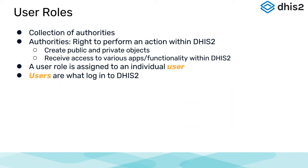What do we mean by user role? Previously we talked about authorities in DHIS2 — these are individual permissions. A user role is a collection of such authorities. For example, if we group together the five different authorities mentioned in the previous slide, we can make something called a DHIS2 user role. An authority is basically the right to perform an action within DHIS2 — it could be public or private, and it gives access to various apps and functionalities. Once a user role is created, we can assign it to a DHIS2 user.